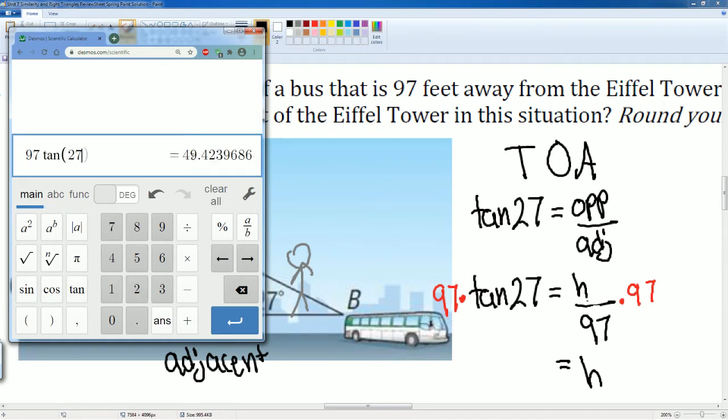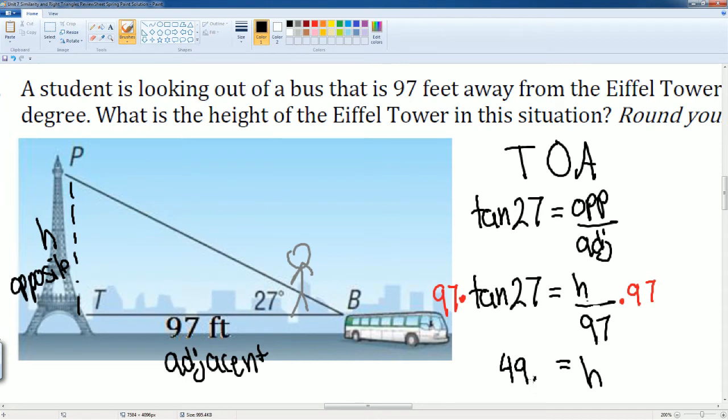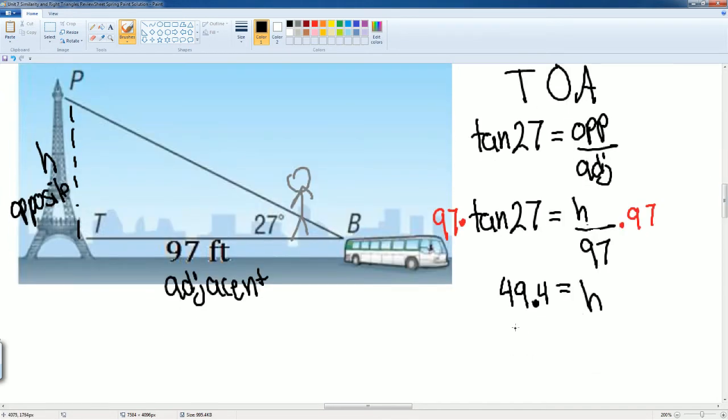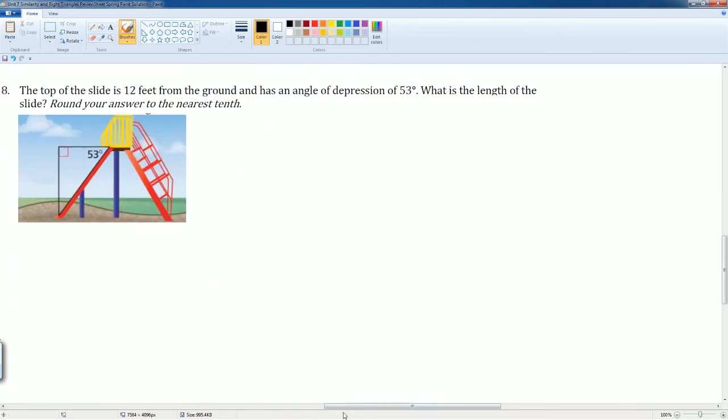...gets you 49.4. That is the height of the Eiffel Tower: 49.4 feet for this scenario. Then we have number 8.